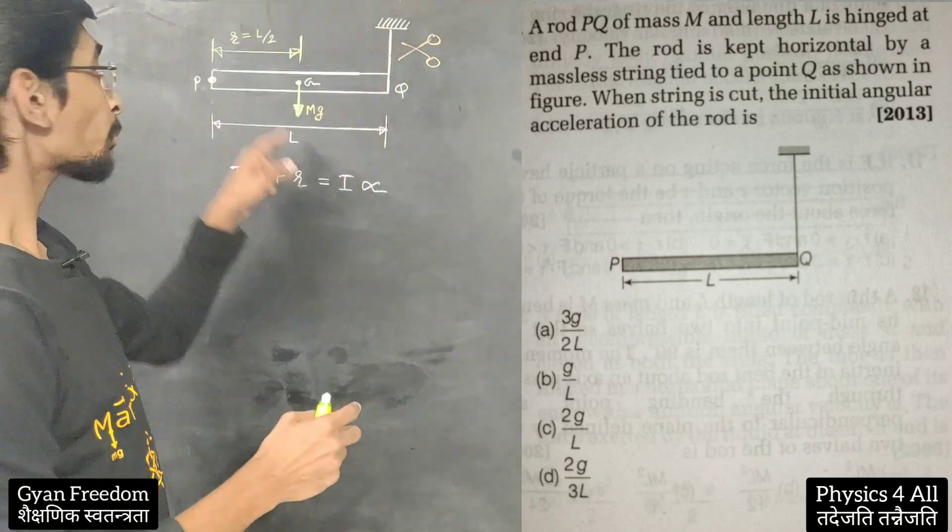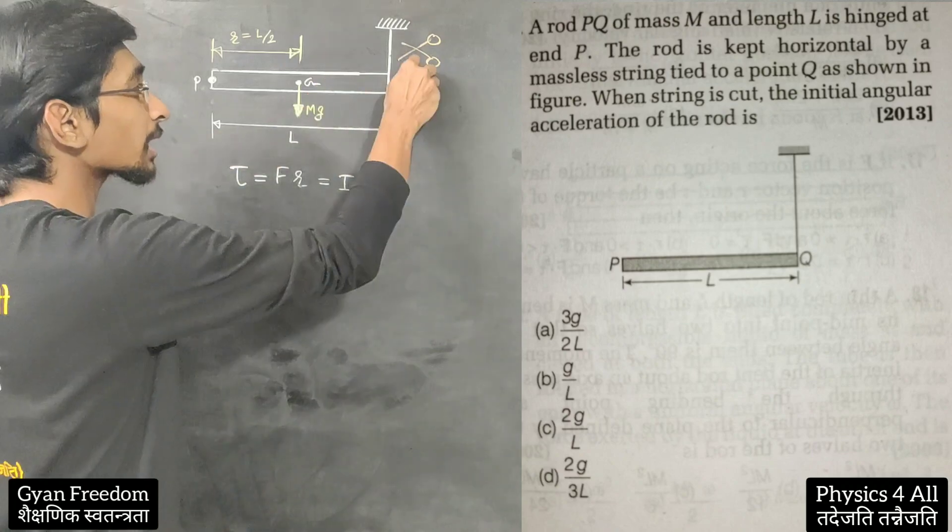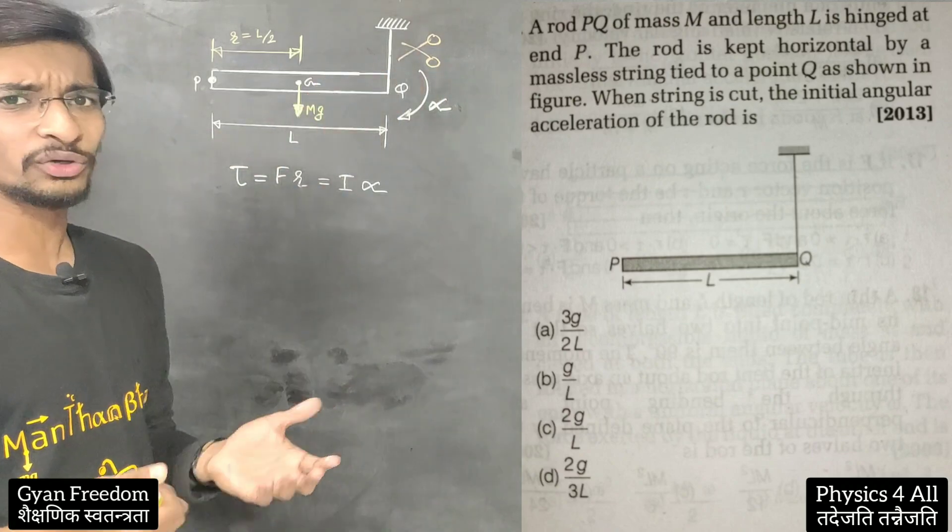So now when we cut from here, this hinge is at point P, so it will rotate with some initial angular acceleration alpha. That is what we need to find.